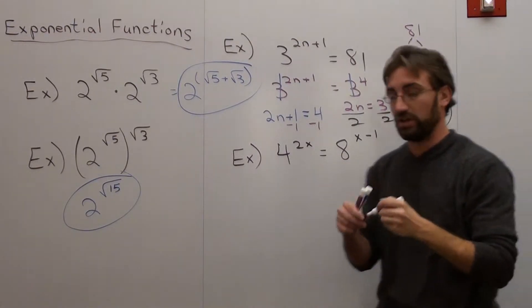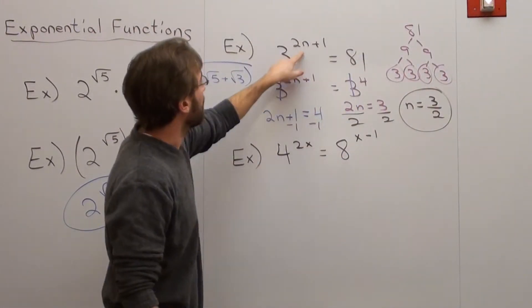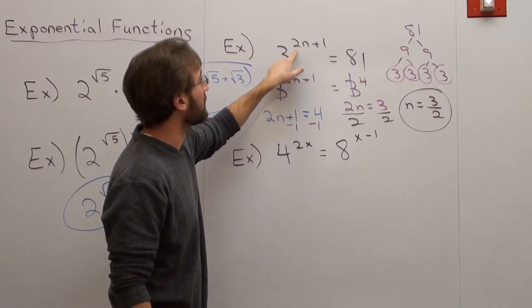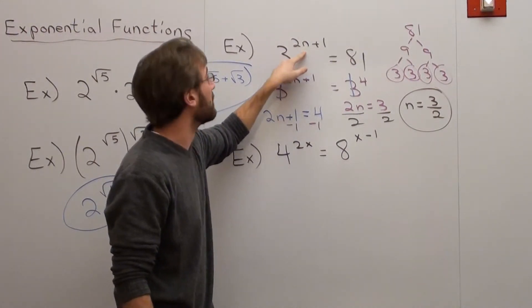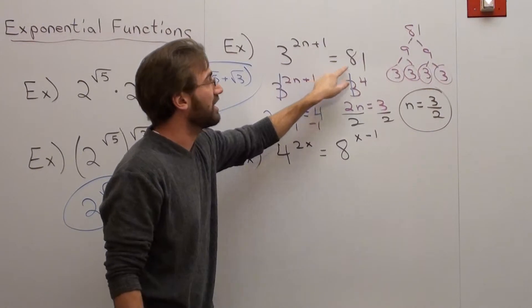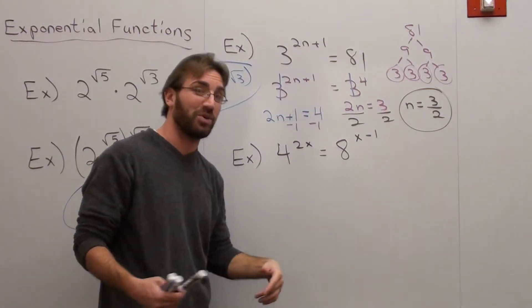Which is pretty interesting. It is the answer. And I'll show you how. If n is 3 halves, 2 times 3 halves is 3. 3 plus 1 is 4. 3 to the 4th is 81. It really does work and it's really quite cool.